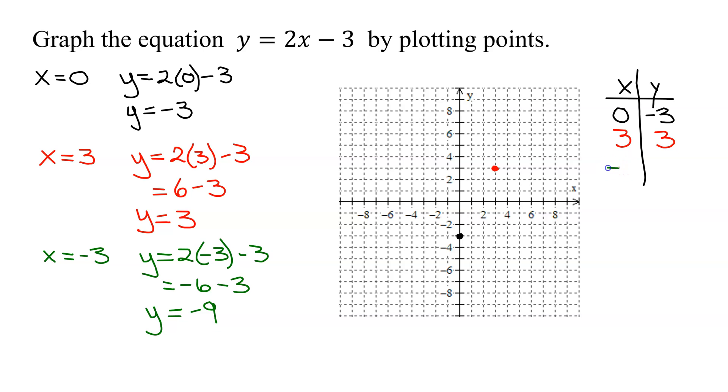So my last ordered pair is negative 3, negative 9. So start at the origin, x is negative 3, left 3, y is negative 9, go down to negative 9. There is my third point.